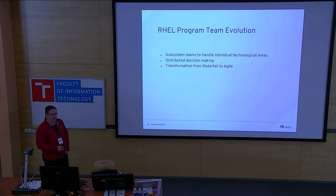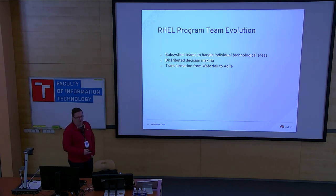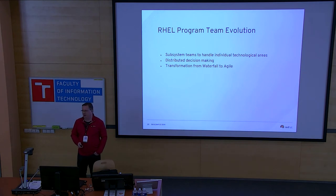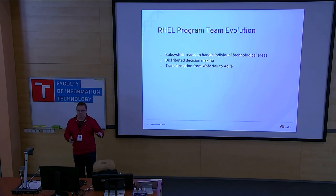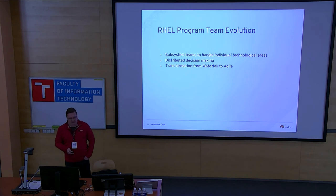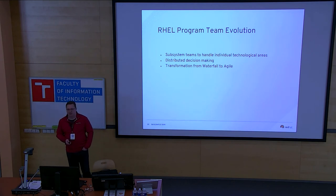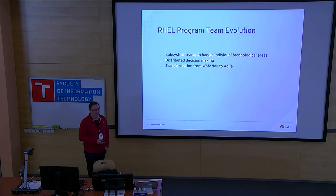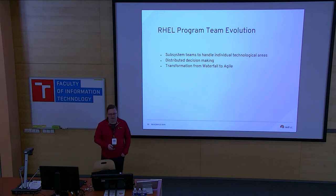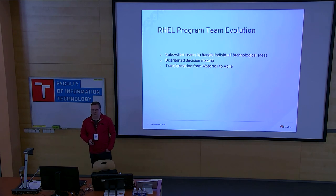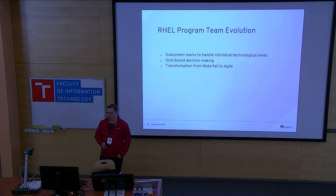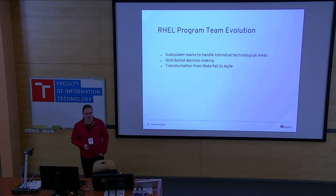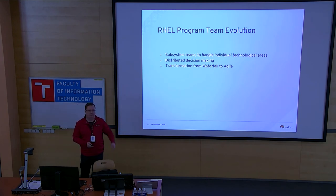Another part that's impacted by open source is the program team — the team that drives the planning and development of individual releases. At some point we figured out that one team doesn't rule them all — it didn't work at all. We had to split and create about 40 different subsystem teams that handle individual technological areas — kernel subsystem, kernel networking, low-level libraries, and so on.